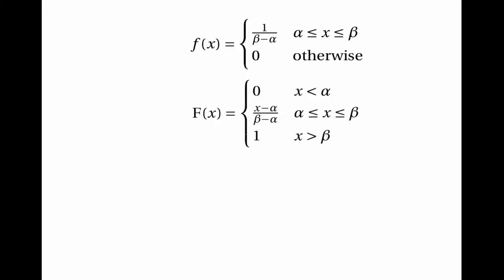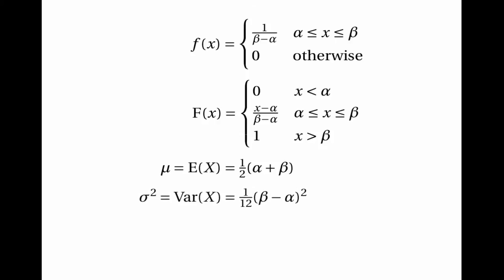Let's summarise all results about the continuous uniform distribution. The probability density function is 1 over beta minus alpha when x is between alpha and beta, and 0 otherwise. The cumulative distribution function is 0 when x is less than alpha, x minus alpha over beta minus alpha when x is between alpha and beta, and 1 when x is greater than beta. The mean is a half of alpha plus beta, and the variance is a twelfth of the square of beta minus alpha. The median equals the mean because the probability density function is symmetrical, and there is no mode because the probability density is the same everywhere.